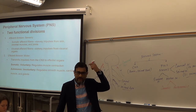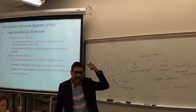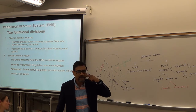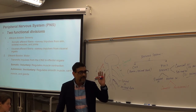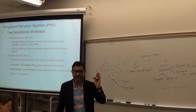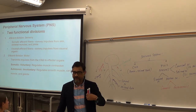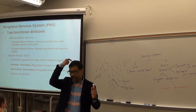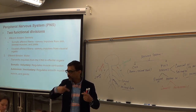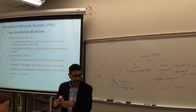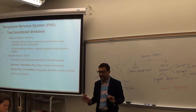When you see something delicious, signal goes from your eye to the brain — that is sensory input. Your brain processes it and sends a signal to the salivary gland to secrete saliva. That is motor output going from the brain to the gland, and it is involuntary — autonomic. When you get scared, your heart starts to beat faster — the brain sends signal to the heart to increase heart rate. That too is autonomic.